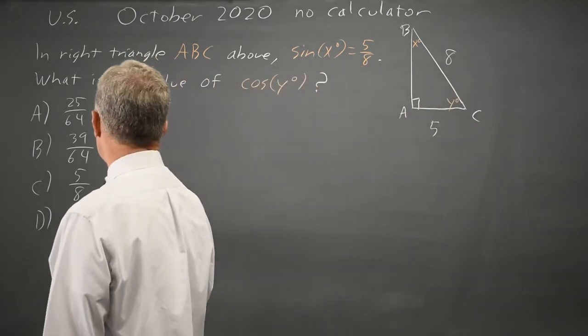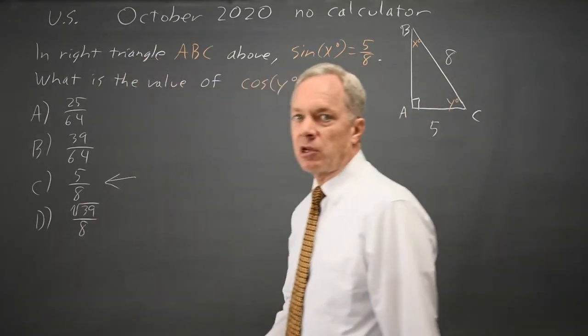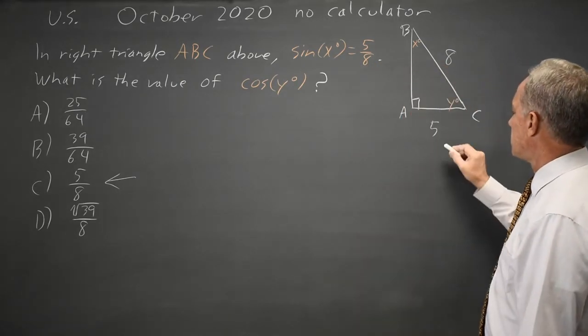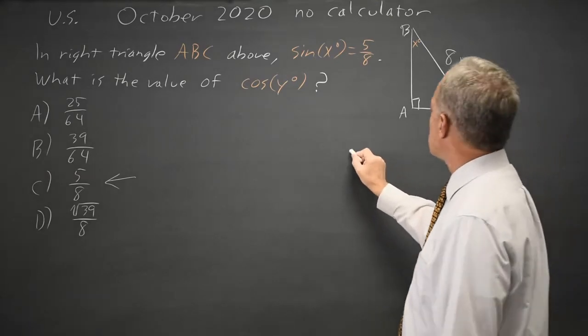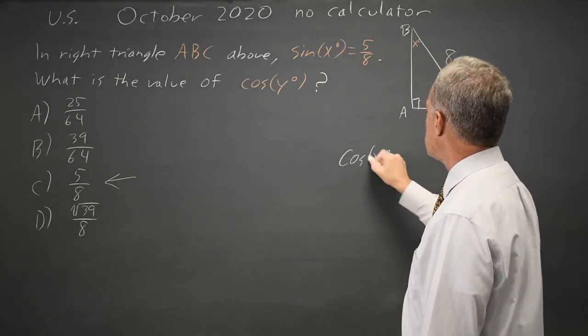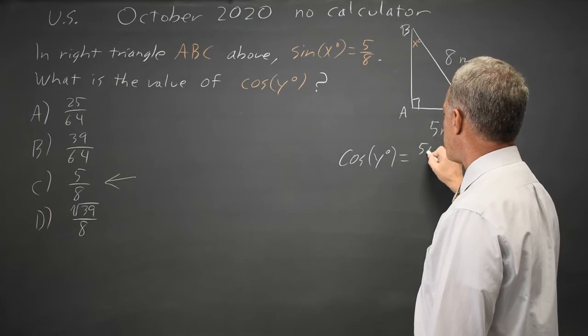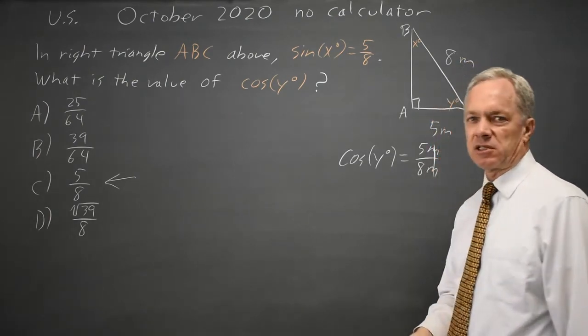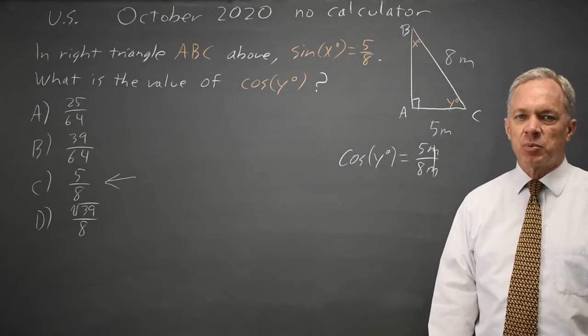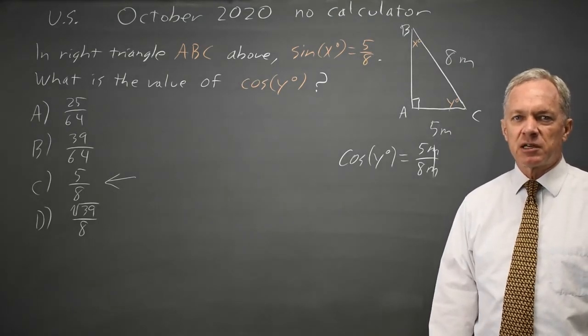So the cosine of y is choice C. I could have written more generally 5m and 8m, and then the cosine of y degrees is the adjacent side, 5m, over the hypotenuse 8m, and the m's cancel, leaving 5 eighths.